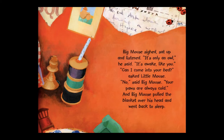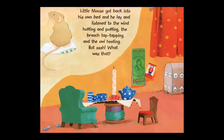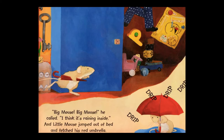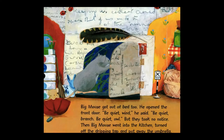Big Mouse pulled the blanket over his head and went back to sleep. Little Mouse got back into his own bed and lay listening to the wind huffing and puffing, and the branch tap-tapping, and the owl hooting. But — shh — what was that? 'Big Mouse, Big Mouse,' he called. 'I think it's raining inside.' And Little Mouse jumped out of bed and fetched his red umbrella. Big Mouse got out of bed too, opened the front door: 'Be quiet, wind! Be quiet, branch! Be quiet, owl!' But they took no notice. Then Big Mouse went into the kitchen, turned off the dripping tap, and put away the umbrella.